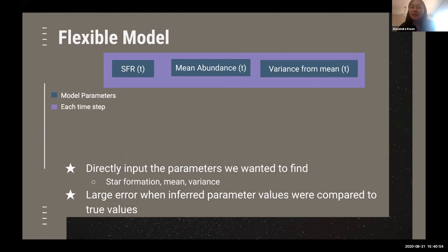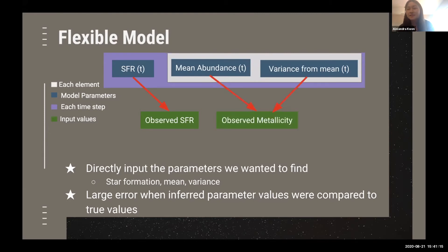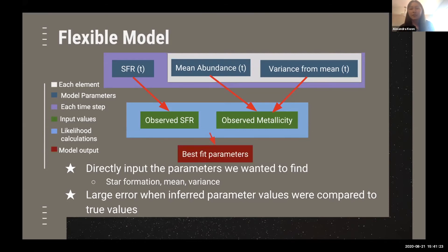For the means and variances, we calculated it for each element, and a downside of this model is that it only works for one element at a time. We then compared all of these parameters to the observed values. The star formation rate was compared to the observed star formation rate at the time period, and the mean and variances were compared to the observed metallicities of the stars formed in that time period. All of this occurred within likelihood calculations that eventually returned us the best fit parameters: the values of the star formation rate, means, and variances that help describe the chemical evolution over time.